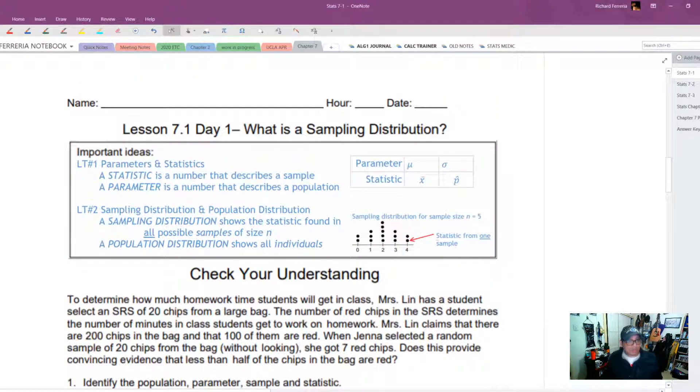So first thing we need to do is get our head straight with parameters and statistics. So a statistic is a number that describes a sample. The one that we did was x bar. The parameter is a number that describes a population. In our population, we call that mu. So you'll notice here that for parameters, these are both Greek letters, mu and sigma. And for the statistic, they don't use Greek letters. So that is one easy way to figure out whether you're talking about a statistic or a parameter.